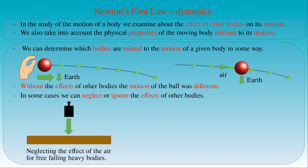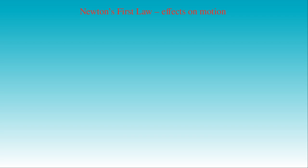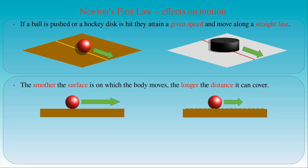When we study a free-falling heavy body we can neglect the air resistance, or we can eliminate the effect of the earth for bodies moving on horizontal flat surfaces such as a table or the floor. In experiments with bodies moving on flat horizontal surfaces we always observe the same result: if a ball is pushed on the floor or a hockey disc is hit on the ice, it attains a given speed and moves along a straight line.